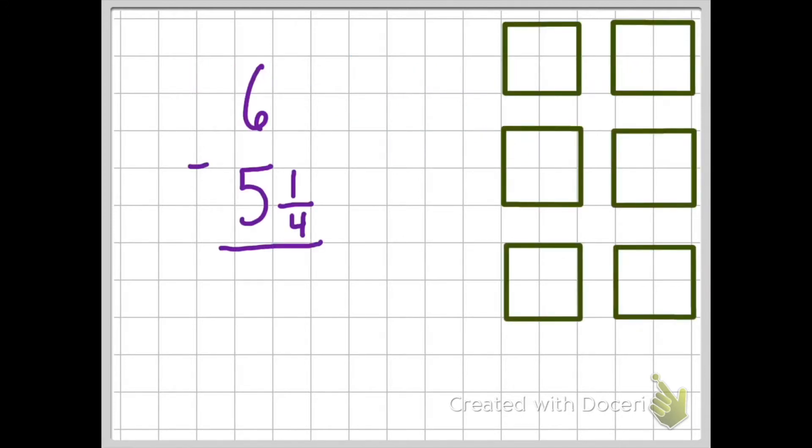In this particular fraction problem, I'm having to subtract 5 and 1/4 from a whole number 6. So off to the side, I drew 6 squares. Right now they want me to subtract 5 and 1/4 from them. I'm used to subtracting whole numbers, so I'm going to go ahead and subtract or cross out 5 of these squares, because 6 minus 5 is easy to do.